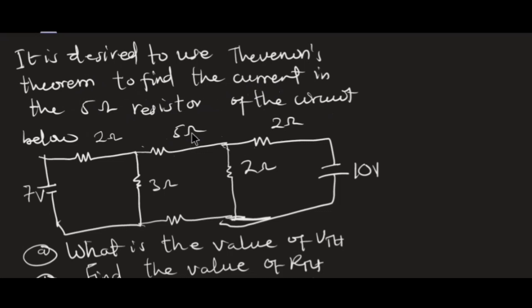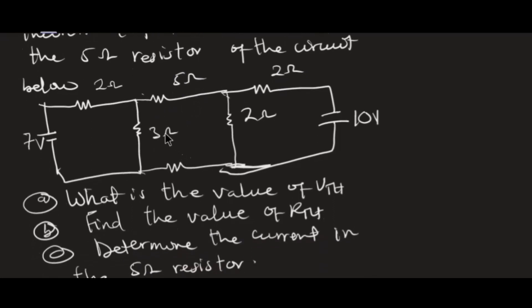The problem says to use Thevenin's theorem to find the current in the 5 ohm resistor in the circuit below. This circuit is a multiple source circuit with a 7 volt source, a 10 volt source, and resistors of 2 ohm, 5 ohm, 2 ohm, 3 ohm, and 2 ohm. We need to find: the value of VTH, the value of RTH, and determine the current in the 5 ohm resistor.